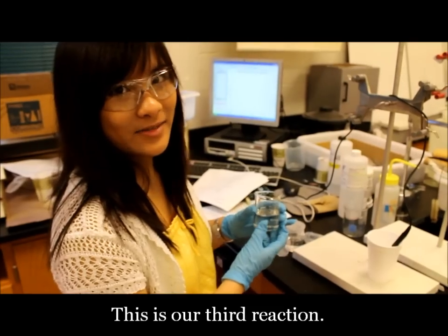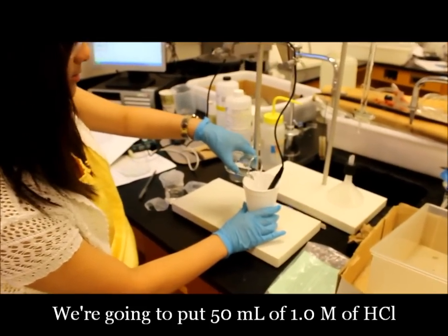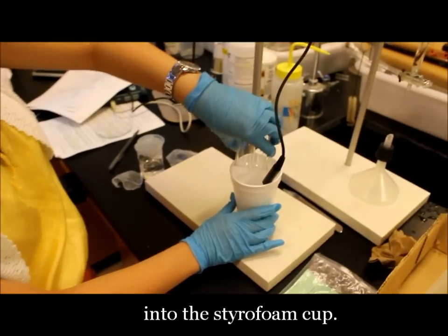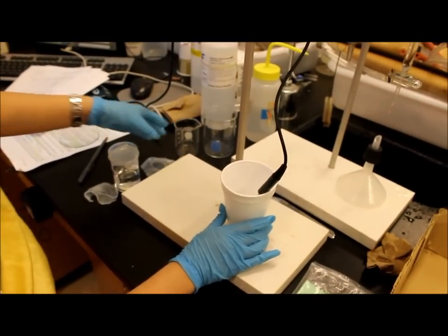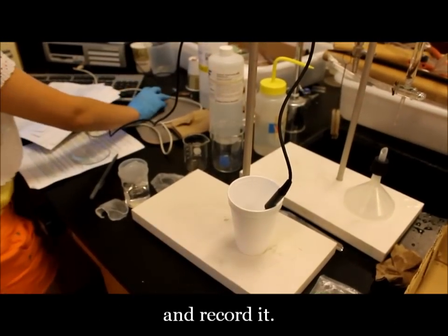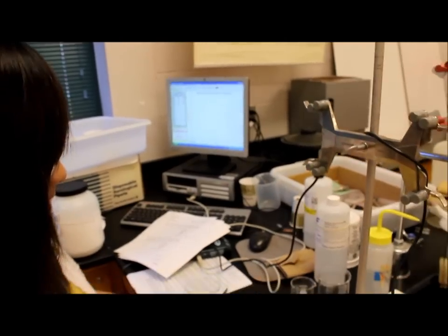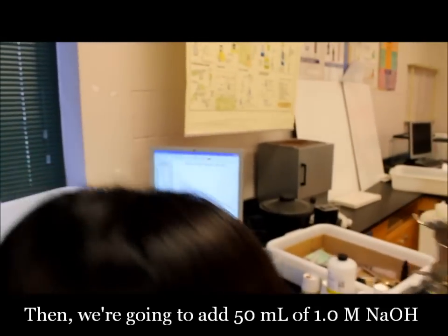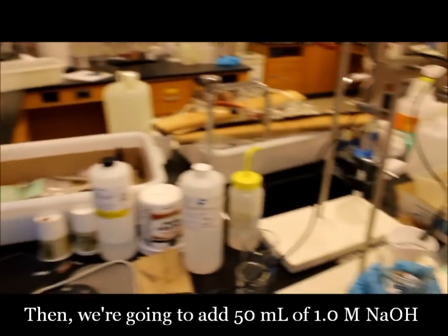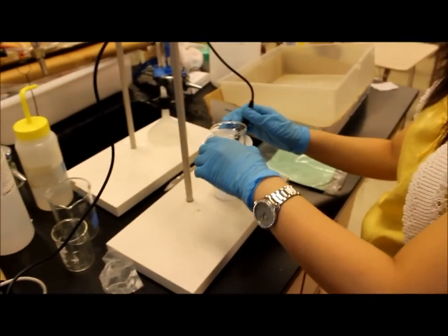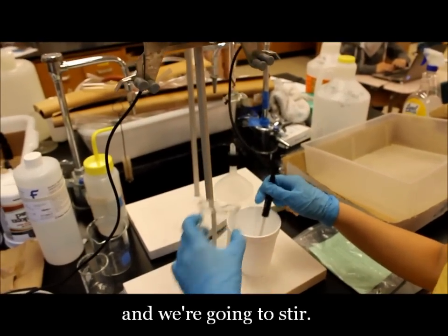So this is our third reaction, and we're going to put 50 milliliters of 1 molar hydrochloric acid into the styrofoam cup. And we're going to measure the initial temperature and record it, then we're going to add 50 milliliters of 1 molar sodium hydroxide to the cup, and we're going to stir.